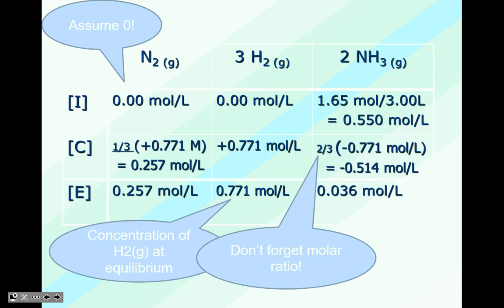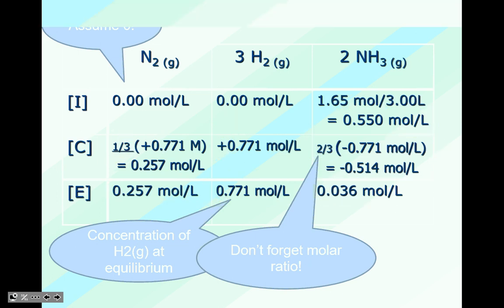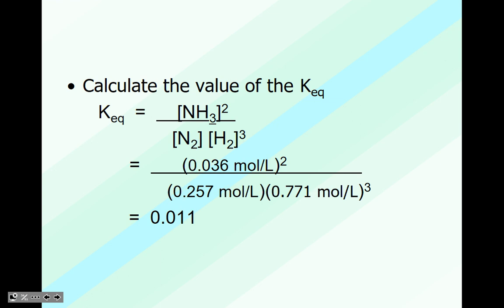Once we calculate the concentration of the ammonia using C = n/V, we use our molar ratios to find the change in concentration. We know the concentration of hydrogen gas at equilibrium is 0.771, which helps us determine the change value and use molar ratios to find the other values. Then we add these values to get our equilibrium concentrations and plug them into the equilibrium constant expression to find Kc.